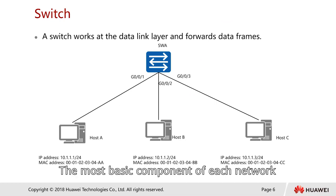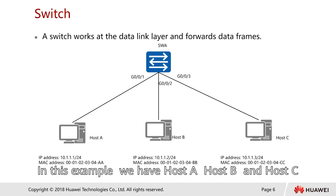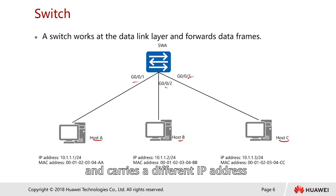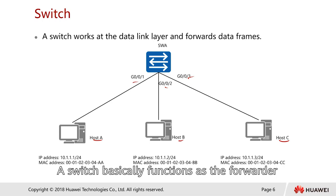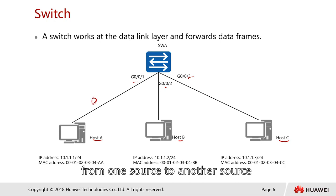Let's talk about the switch, the most basic component of any network. A switch works at the data link layer and forwards data frames. In this example, we have hosts A, B, and C, each connected to different ports, each carrying a different IP address and different MAC address. A switch basically functions as a forwarder to carry traffic from one source and forward the packet to another. In the next few slides, we will look at more details on how a switch works.